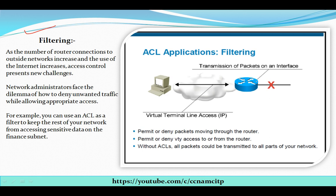For example, this is my router and my traffic is going out of this interface, so I can put one access list here. A host trying to access any data can be blocked — the traffic will not go out of this interface. ACLs permit or deny packets moving through the router and permit or deny access to or from the router. Without ACL, all packets could be transmitted.